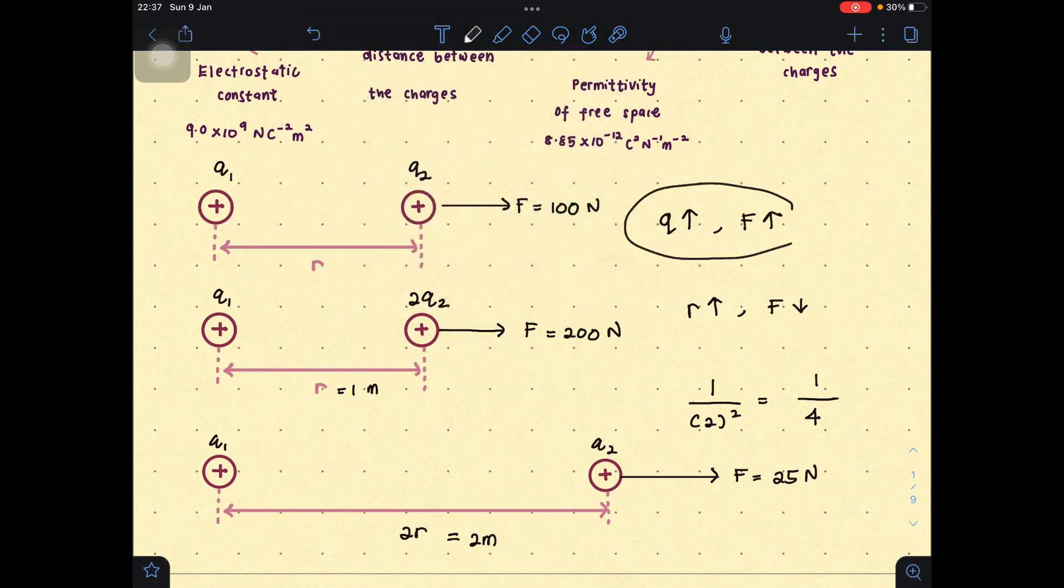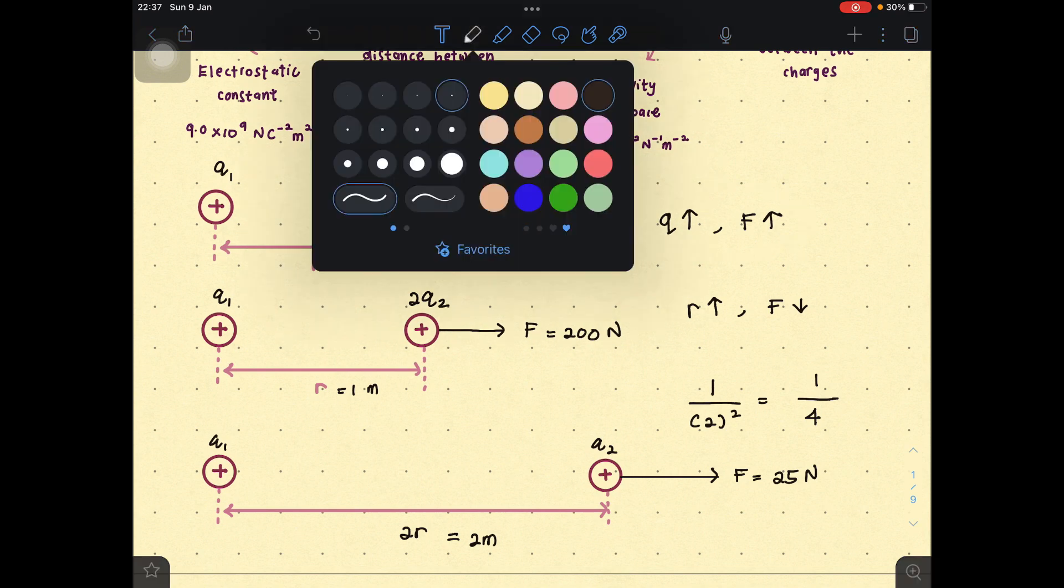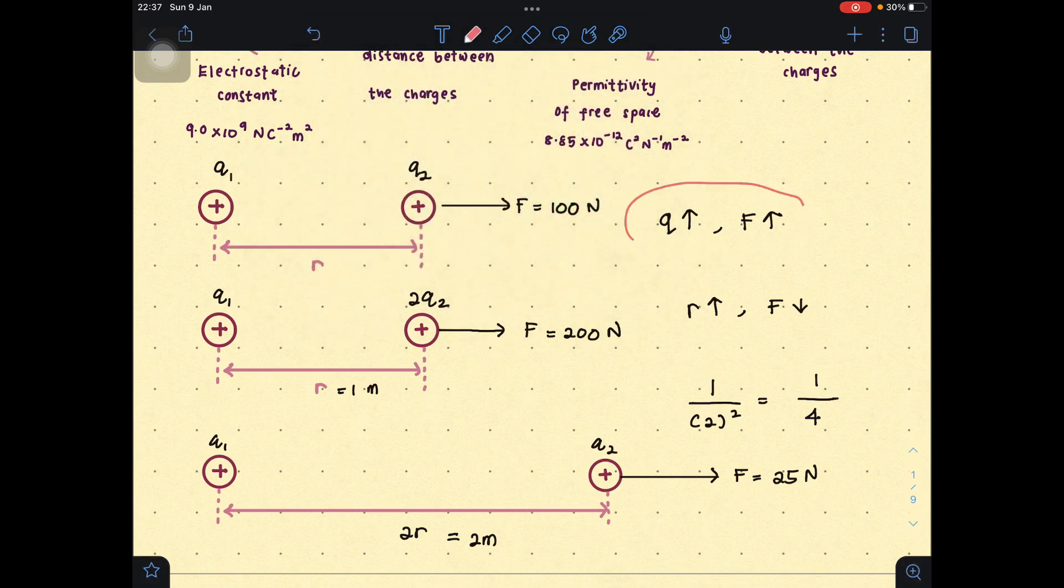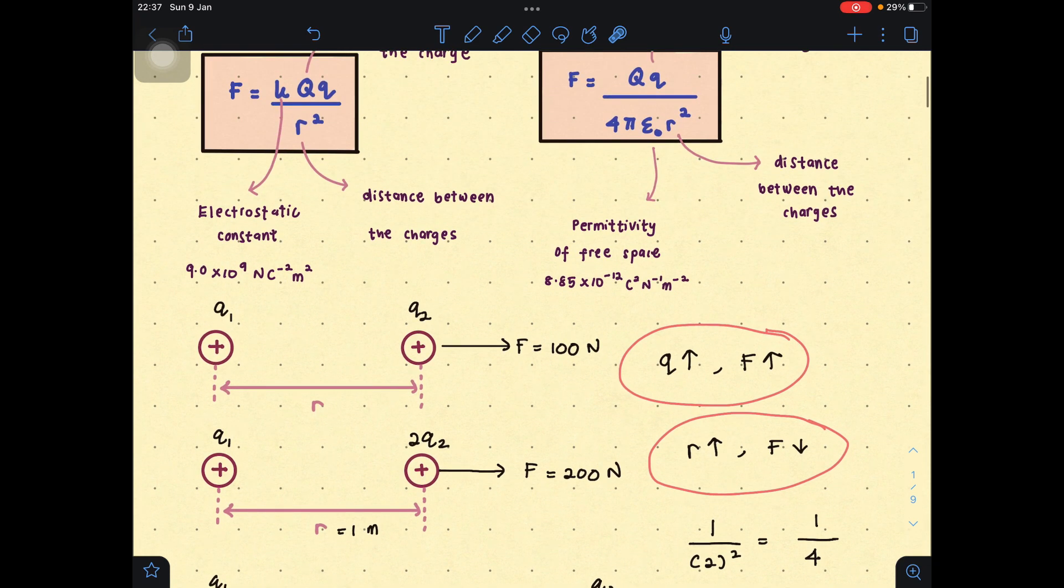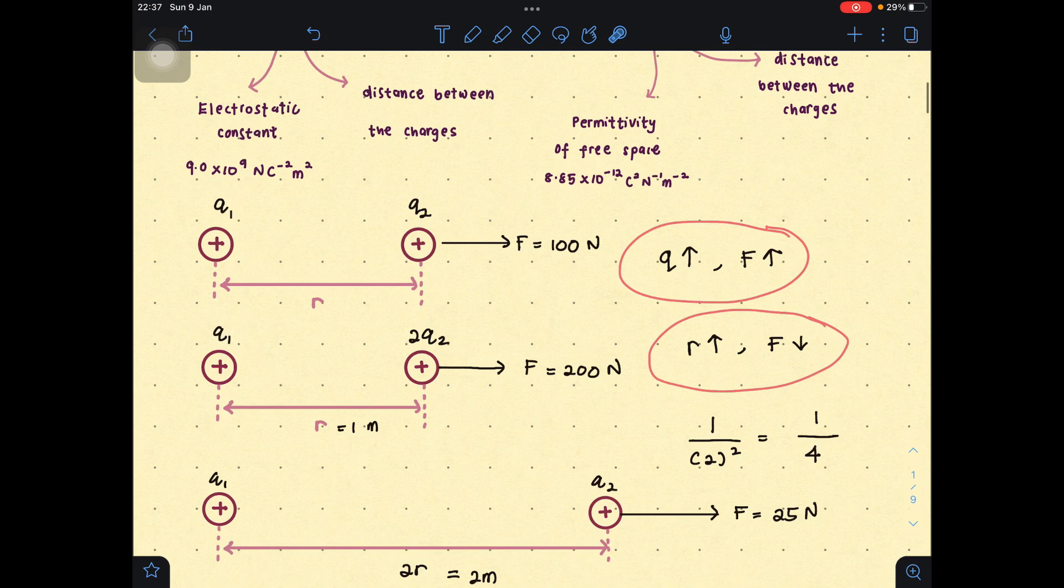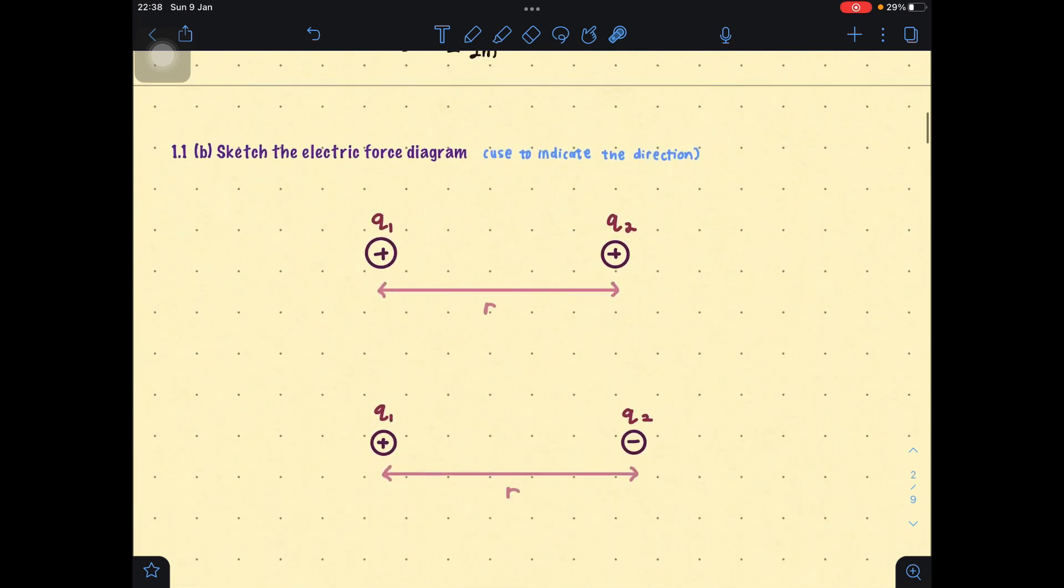You can see the relationship between these parameters here. When Q increases, F will increase. When R increases, F will decrease. Then, this one, you need to be careful because the original formula is R squared. So F will decrease by 1 over 4, depending on the formula here, on the value here.